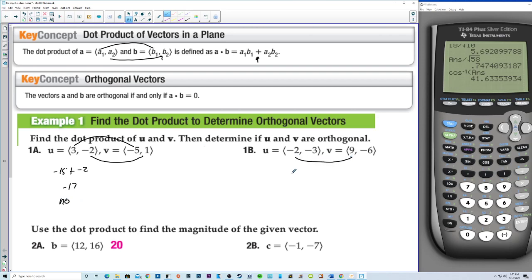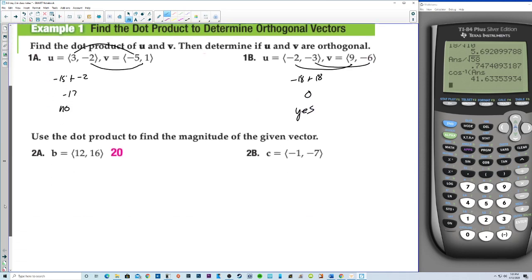How about this one? We have negative 18 and then plus positive 18, and that is 0. Yes, these are orthogonal. They do form a 90-degree angle.